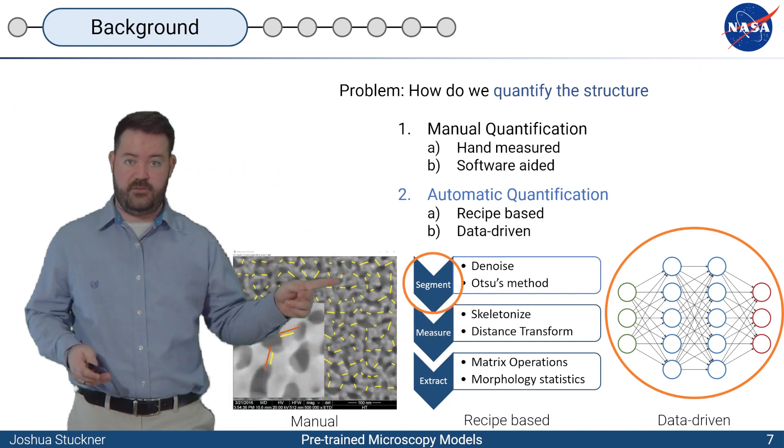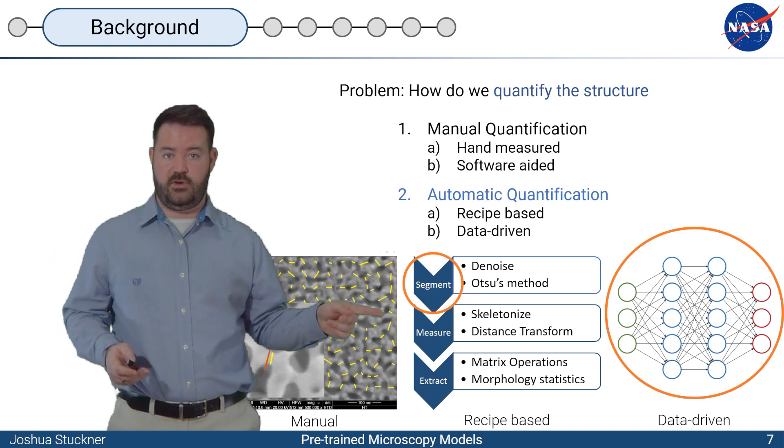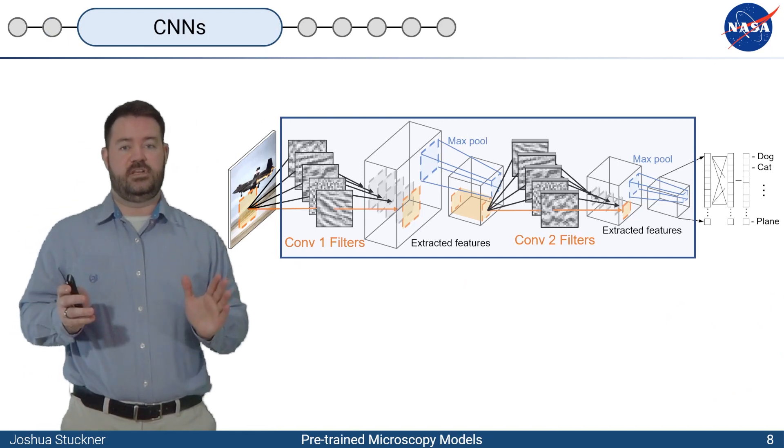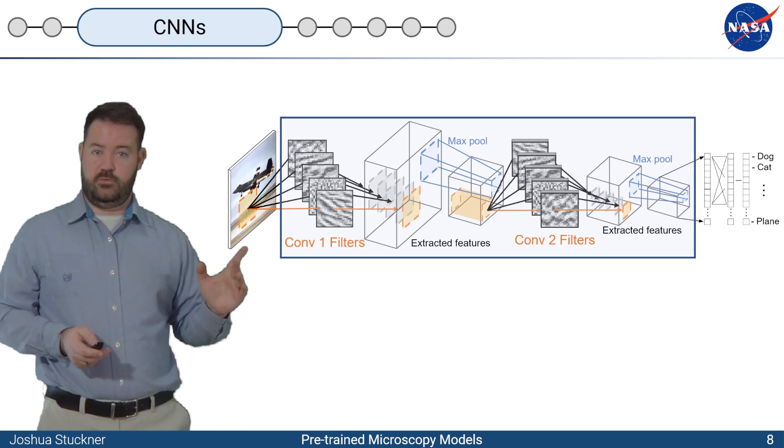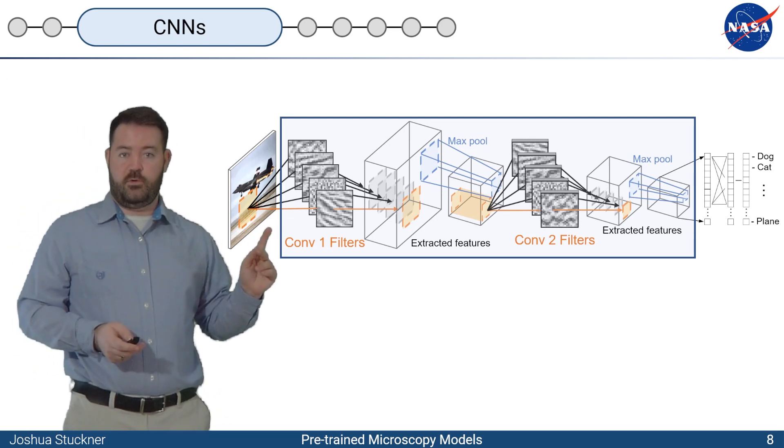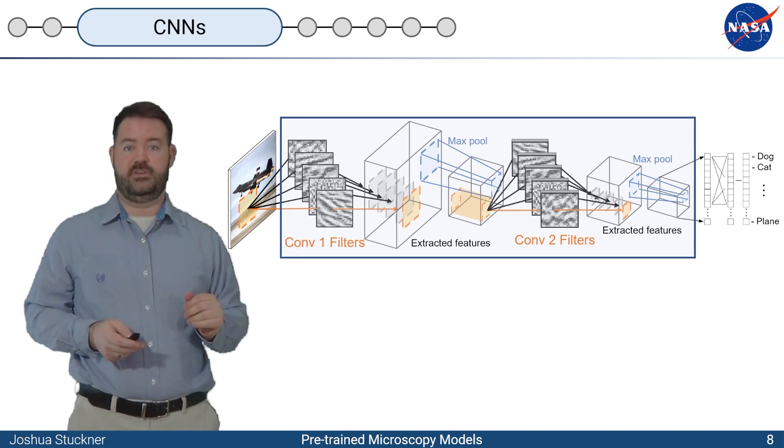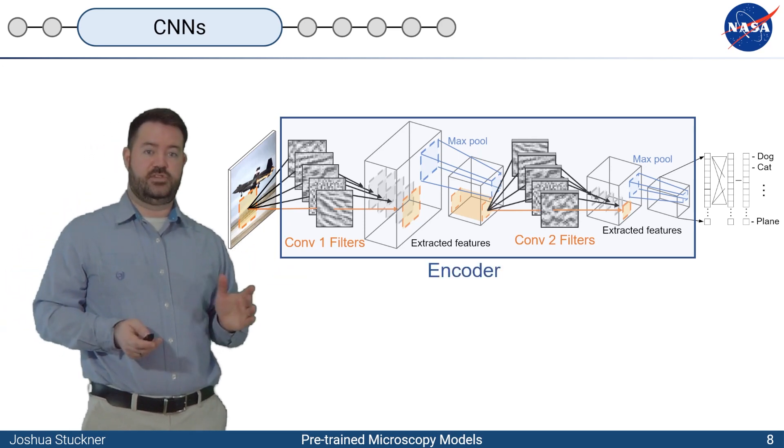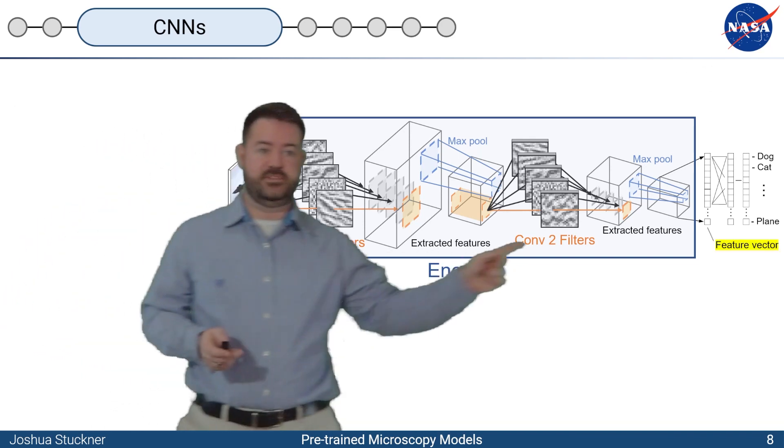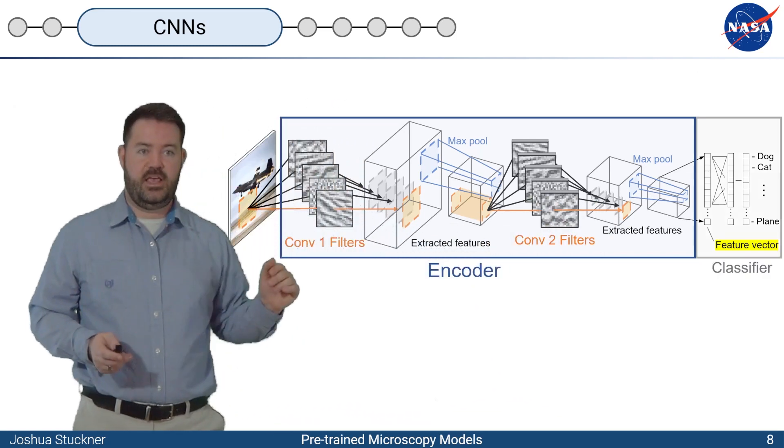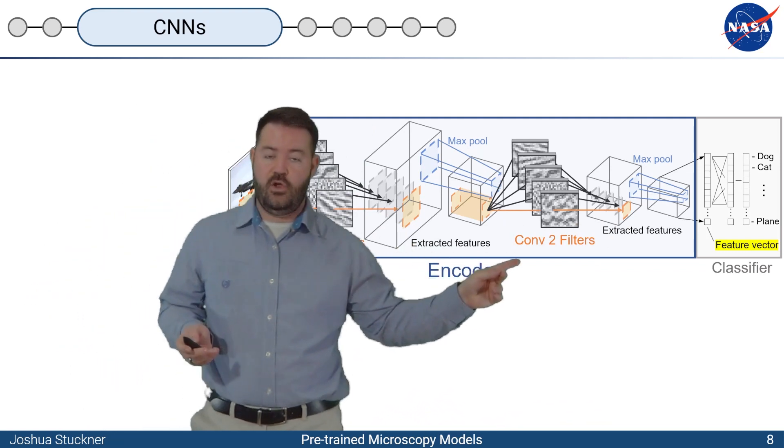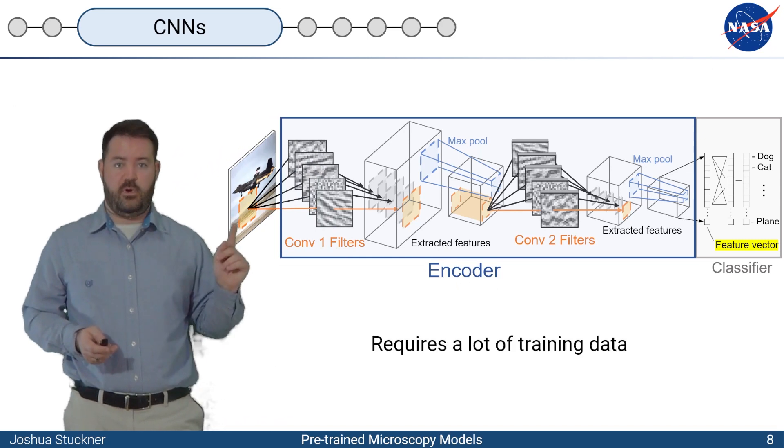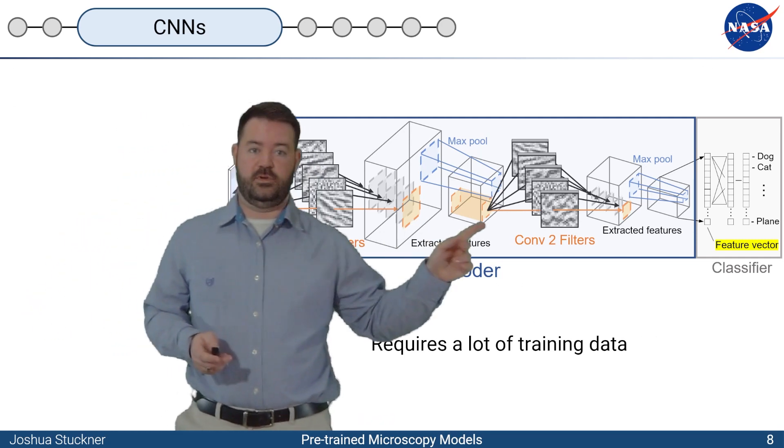Convolutional neural networks are the state-of-the-art in image analysis and quantification. These neural networks are made out of two parts: an encoder, which will take the image and then produce some feature vector at the end after doing all these convolutional things, and then some sort of task-specific head, such as a classifier or perhaps a segmentation network or a regression head in order to predict properties. And this requires a lot of training data in order to learn the filters.